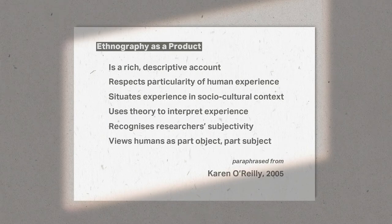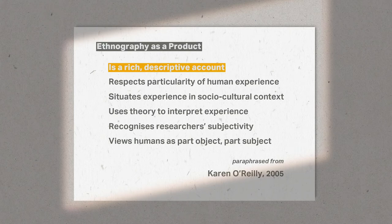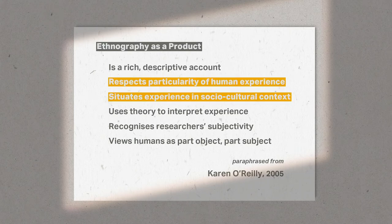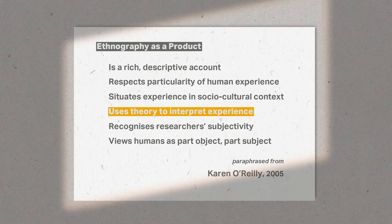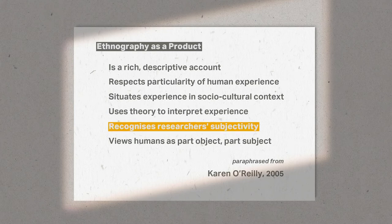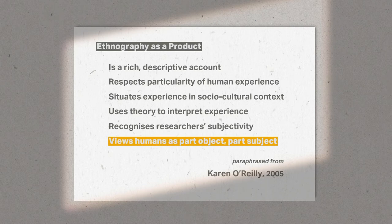It is also a product — as an outcome of a process. Ethnography is a rich, descriptive account of human experience. It respects the particularity of that experience and does not generalize it. It acknowledges the role of theory in shaping our understanding of human experience and recognizes that the representation we create is filtered through the ethnographer's subjectivity. It presents the research participants as part object and part subject, meaning that we learn about our participants and we learn from them. It acknowledges their agency in shaping their context and our research.